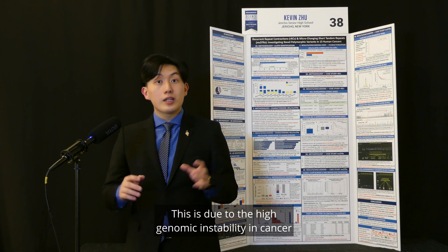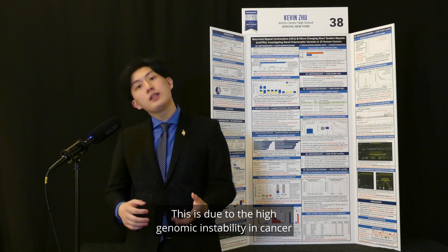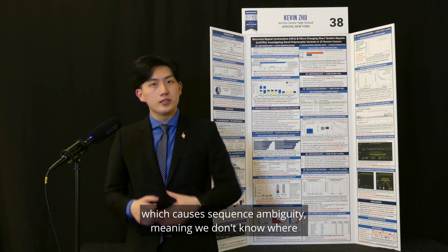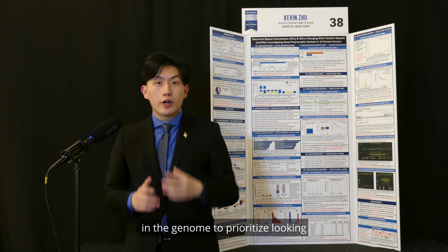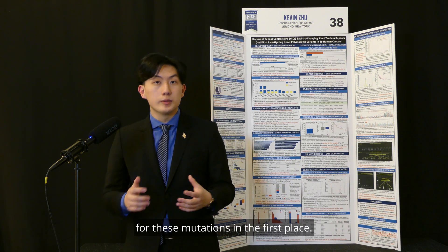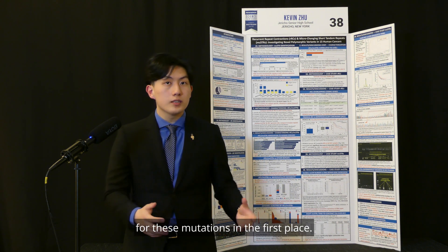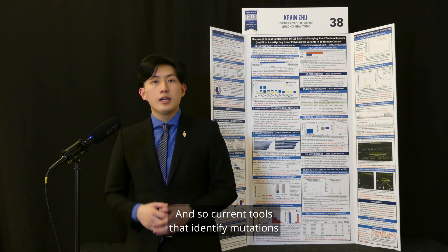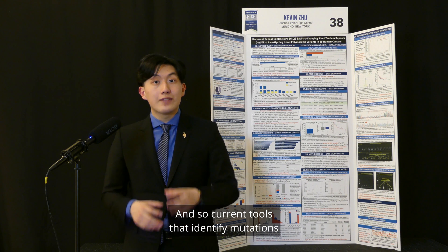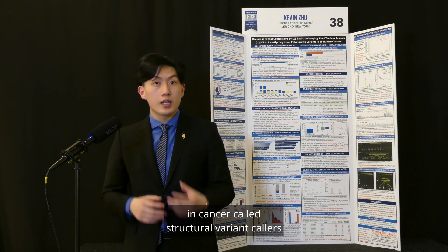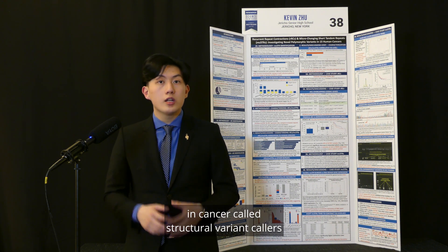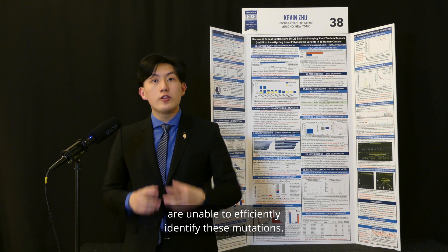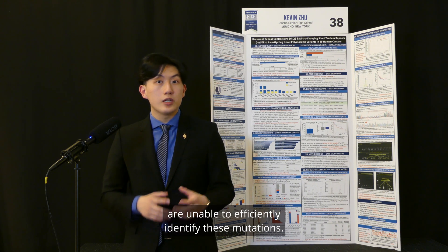This is due to the high genomic instability in cancer, which causes sequence ambiguity, meaning we don't know where in the genome to prioritize looking for these mutations in the first place. Current tools that identify mutations in cancer, called structural variant callers, are unable to efficiently identify these mutations.